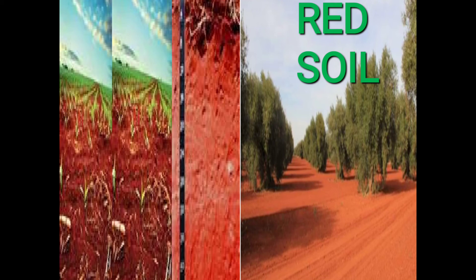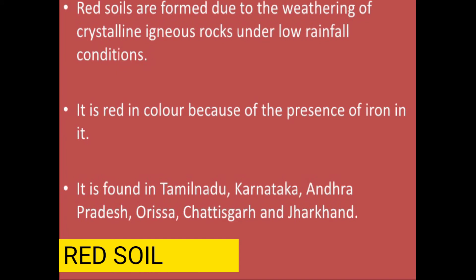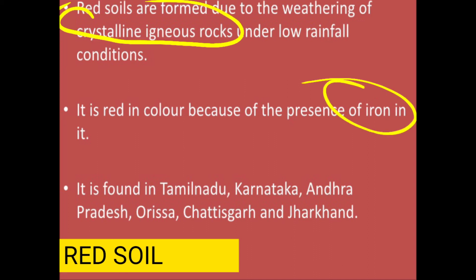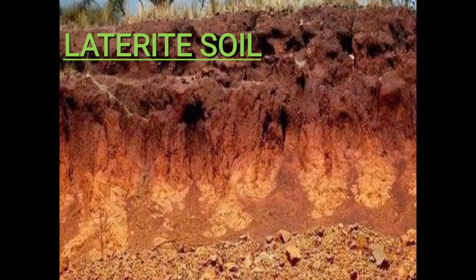The third type is red soil, formed due to weathering of crystalline igneous rocks under low rainfall conditions. It is red due to the presence of iron — iron gives it a reddish color, so it is also called red or yellow soil. It is found in Tamil Nadu, Karnataka, Andhra Pradesh, Odisha, Chhattisgarh, and Jharkhand.